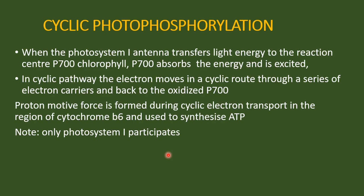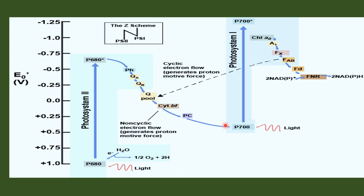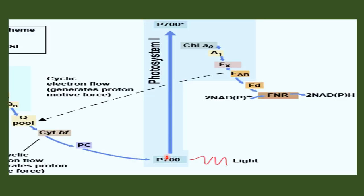The electrons continue through cytochrome F, then plastocyanin, and finally back to the oxidized P700. So the electrons are excited by absorbing light, moving first to a chlorophyll A molecule, then iron-sulfur protein, then ferredoxin (FD), which transfers electrons to cytochrome B563, then the plastoquinone pool, then cytochrome B6 and F, then plastocyanin, and back to oxidized P700.